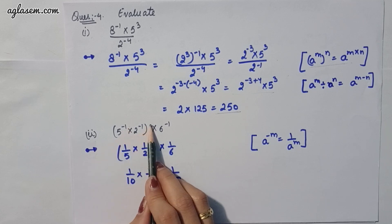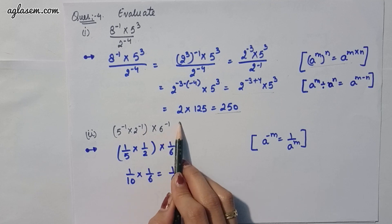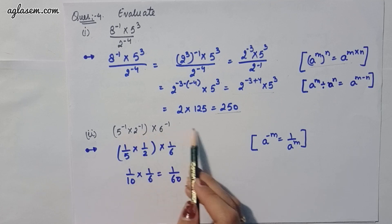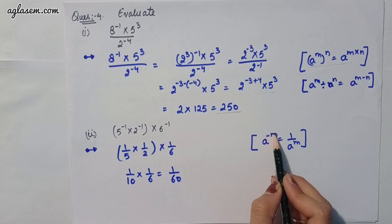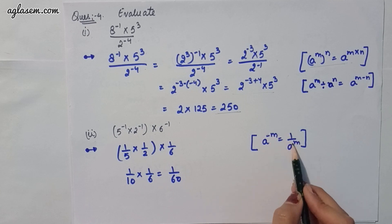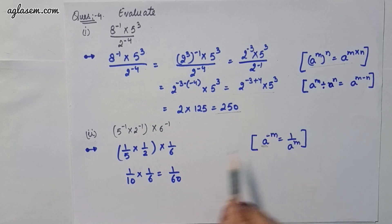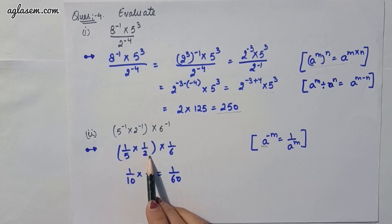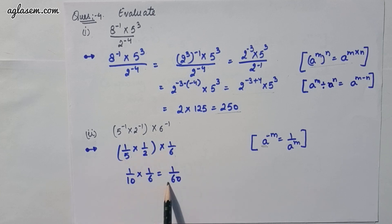Moving to the second part: 5^(-1) × 2^(-1) × 6^(-1). The negative exponents convert to 1/5 × 1/2 × 1/6. Solving this gives the answer 1/60.